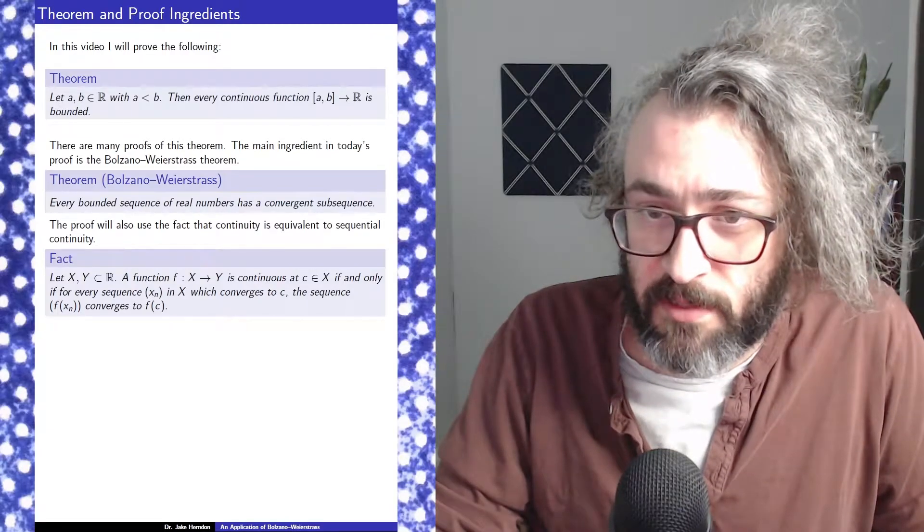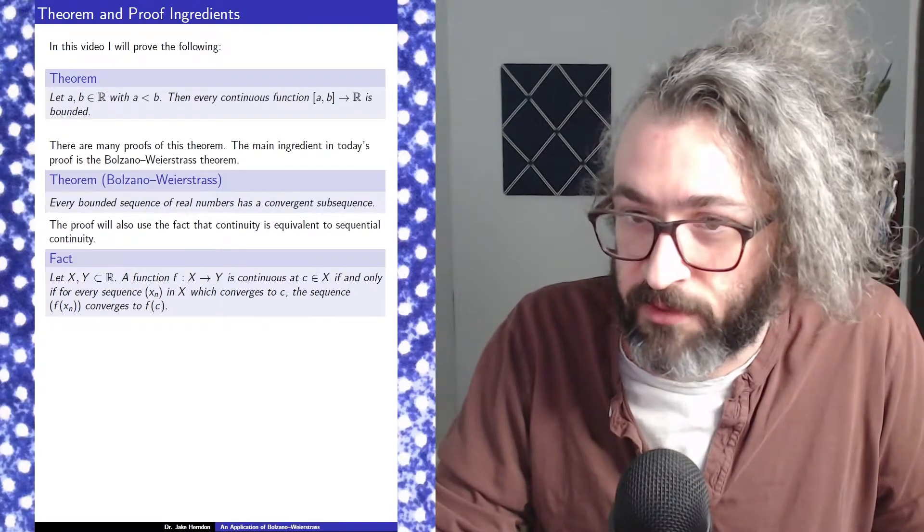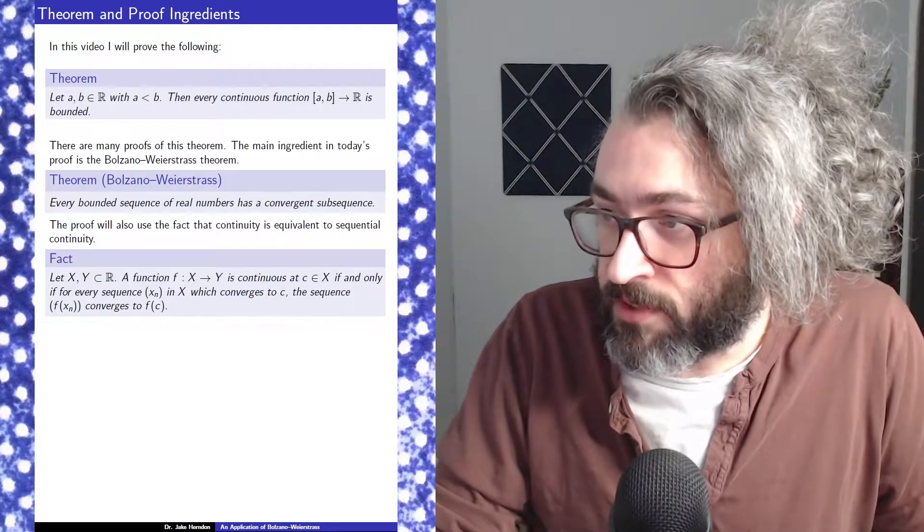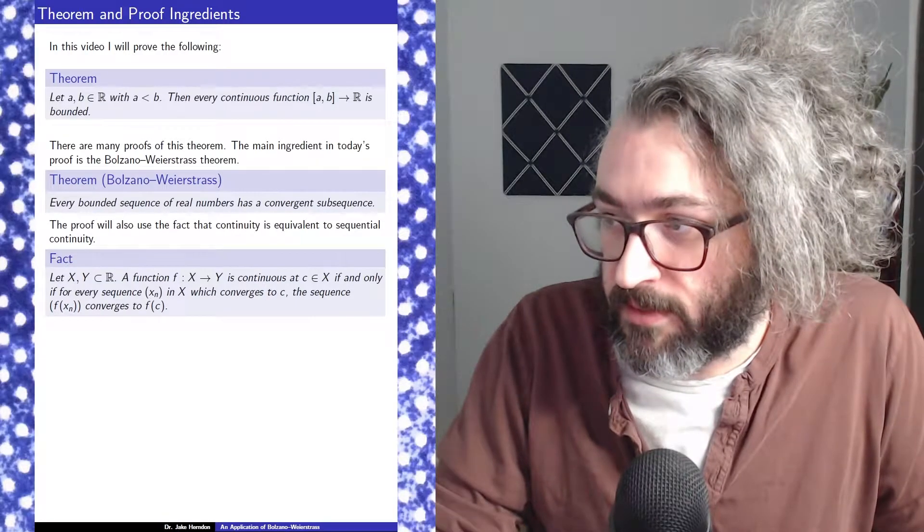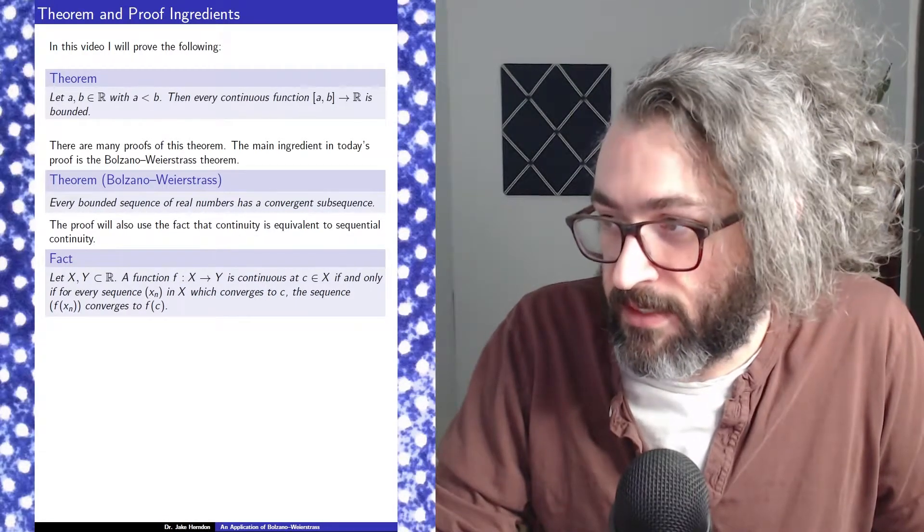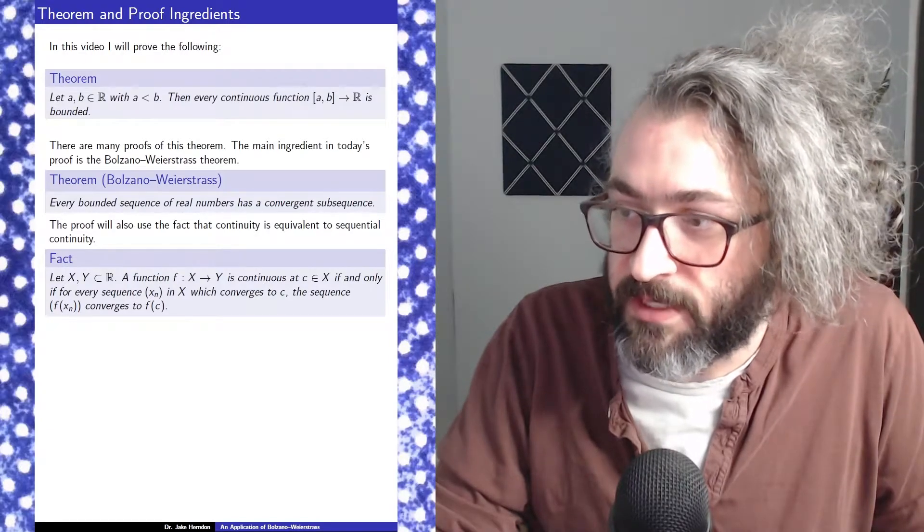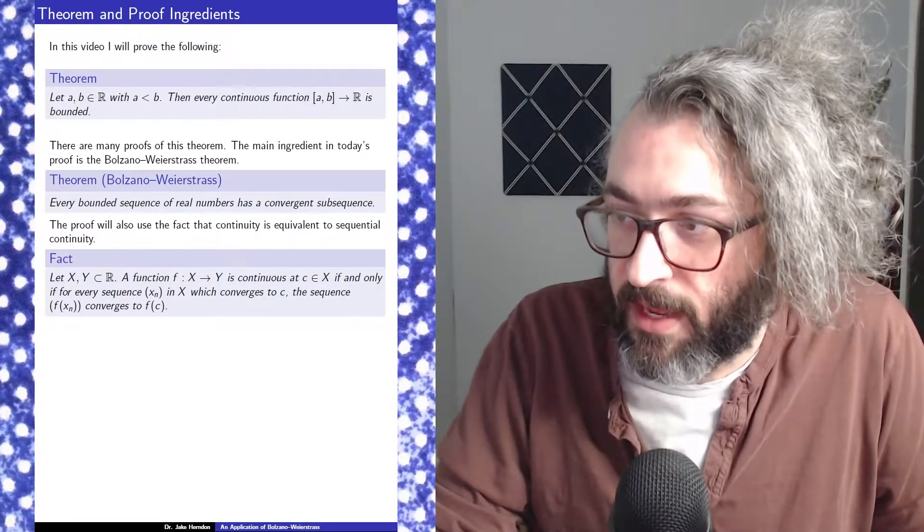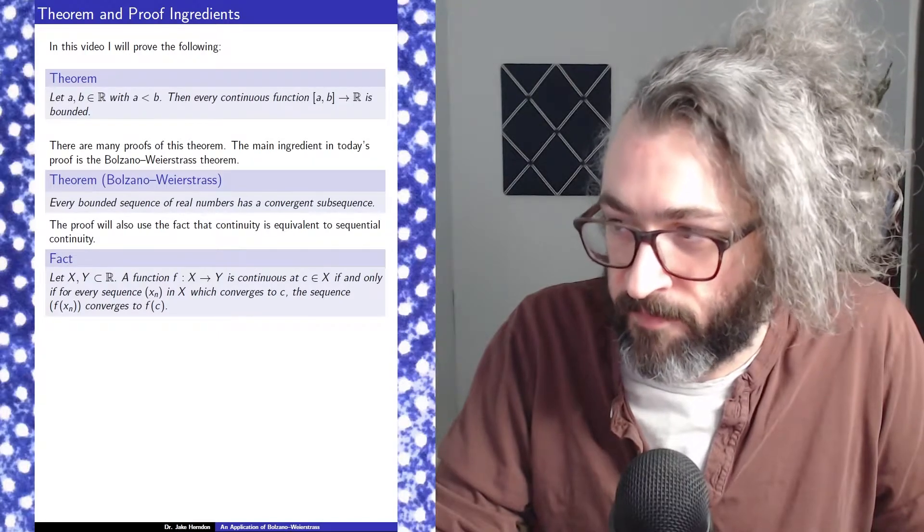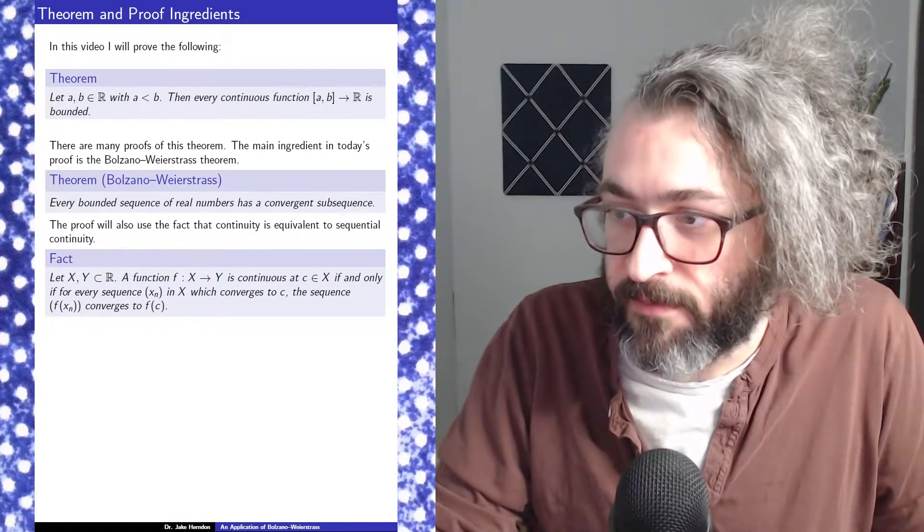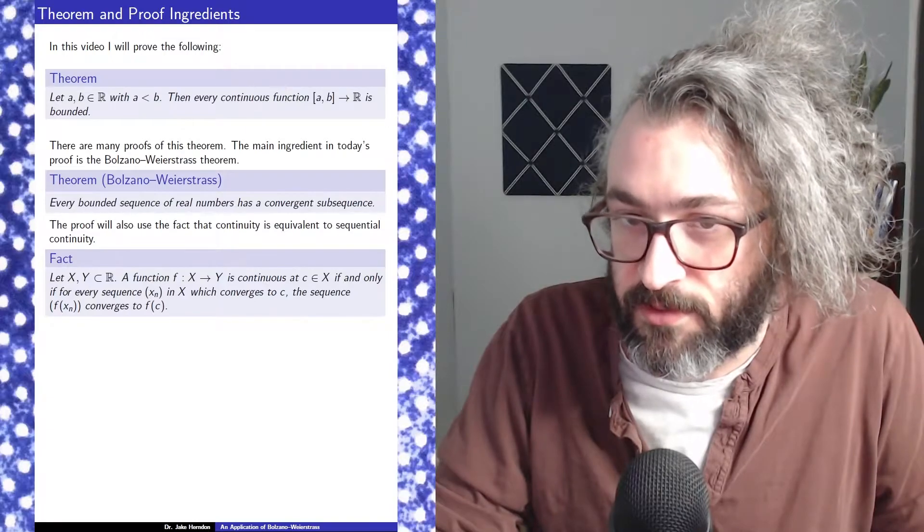Let x and y be subsets of the real numbers. A function f from x to y is continuous at c in x if and only if for every sequence x_n in x which converges to c, the sequence f(x_n) converges to f(c).